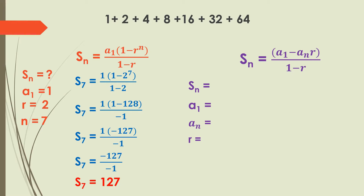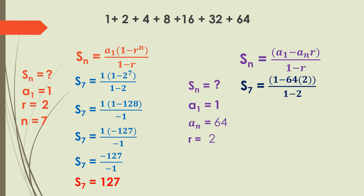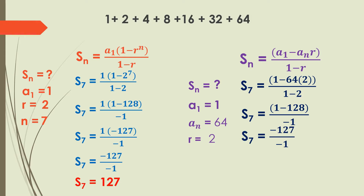Now let's solve using the second formula. We identify the variables: S sub n is unknown, a sub 1 is 1, a sub n is 64, and r is 2. Replacing variables: S sub 7 equals (1 minus 64 times 2) all over (1 minus 2), which gives S sub 7 equals (1 minus 128) over negative 1, equals negative 127 over negative 1, which simplifies to 127. Both formulas give the same answer.